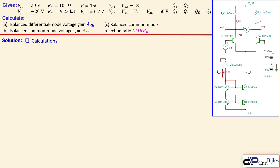The reference current Im is already given, created by the resistor Rm, transistor, and supply voltage VEE. We now make the DC analysis using Kirchhoff's Voltage Law. Starting from one point and ending at the other ground point, we sum the voltage across Rm, the base-emitter junction voltage VBE6 for Q6, and VBE3 for Q3, adding up to zero.